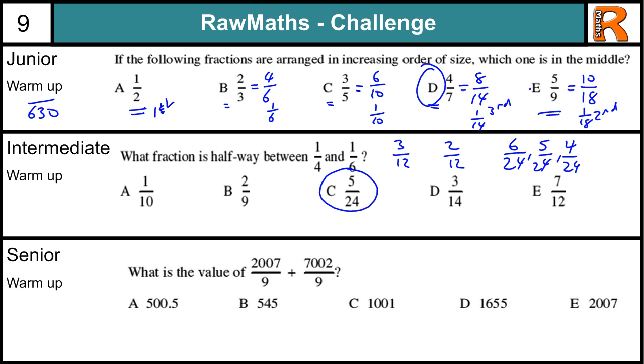The senior warm-up. Possibly the easier of all three questions. If we realize that we can just add the top to get nine-thousand-nine, all over nine. And then we divide nine-thousand-nine by nine. Nine goes into nine once.